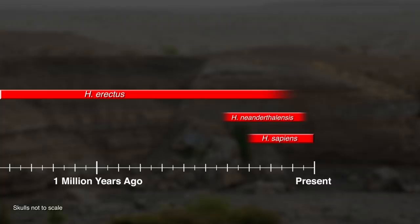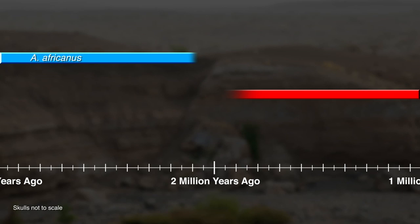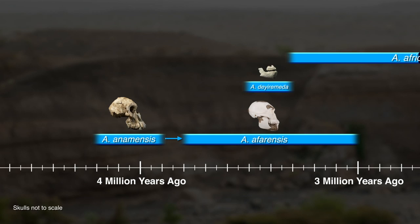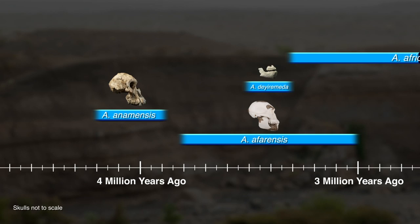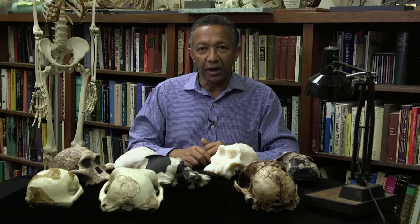It was not like anamensis disappeared and Australopithecus afarensis arose. But rather, the potential ancestor, Australopithecus anamensis, and its descendant Australopithecus afarensis actually overlapped in time — at least for 100,000 years between 3.9 and 3.8 million years ago. So this is a major discovery.